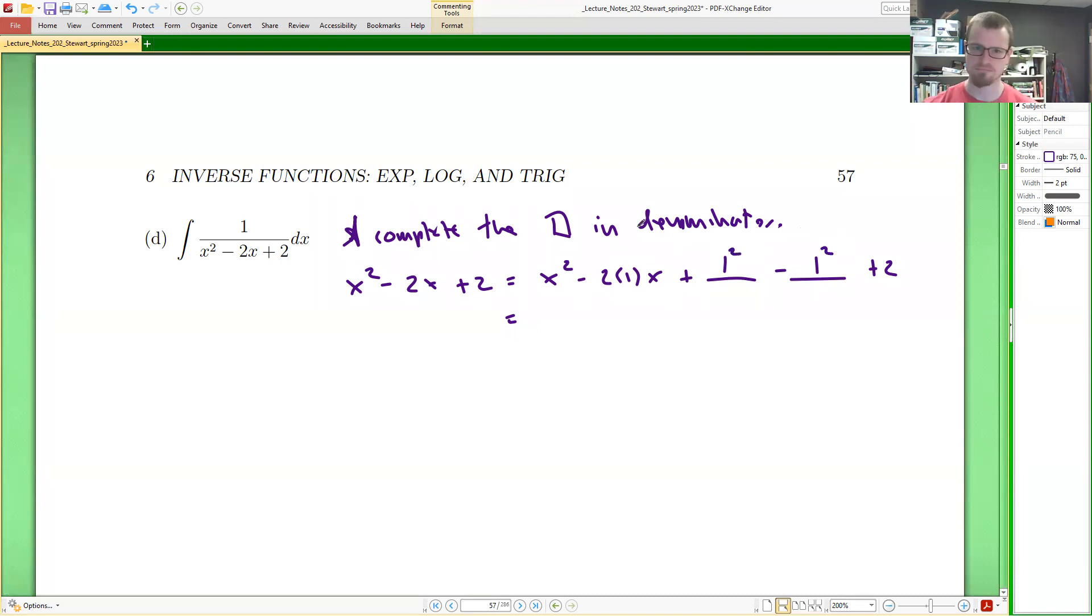This would give us x minus 1 squared. That's what we end up with, this thing. And then the minus 1 and plus 2 is going to give us a plus 1. And 1, of course, can be written as 1 squared without any concern.